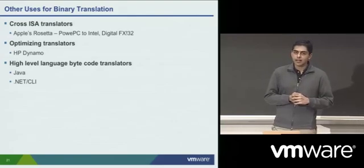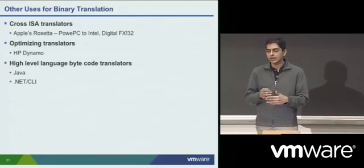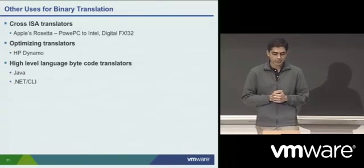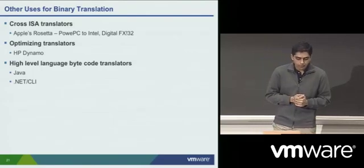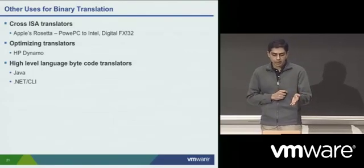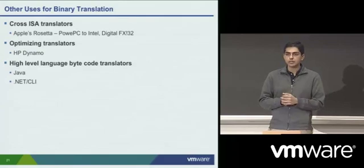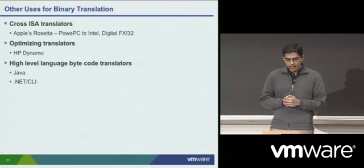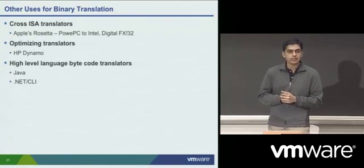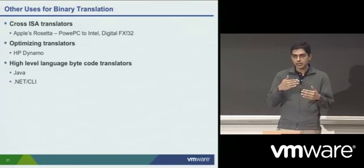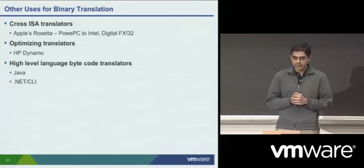There are other very interesting uses for binary translation outside of the trap and emulate model. One application is cross-ISA translation — for example, Apple's Rosetta software used that. There's also binary translation being used for optimizations, like in the case of HP Dynamo. And of course, high-level languages like Java and .NET use bytecode translators, where they use just-in-time translation to do this kind of binary translation.